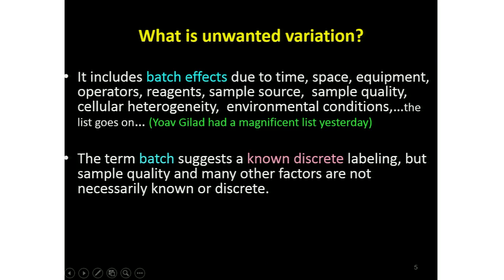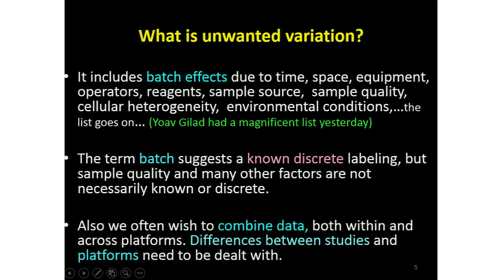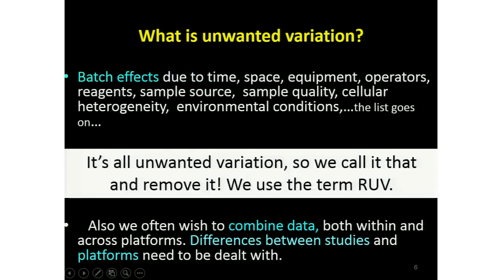The term batch is really not adequate. For example, sample quality — it's hardly reasonable to call sample quality a batch effect. Batch suggests something discrete, something known, whereas sample quality is neither discrete nor known. So we coined this phrase 'unwanted variation.' We also want to combine data across studies, and you might call a study a batch. That's fine. Or if you have two platforms or two versions of the same platform, maybe that's a batch. But not everything is a batch. We use this phrase 'unwanted variation', and of course our goal is to remove it.